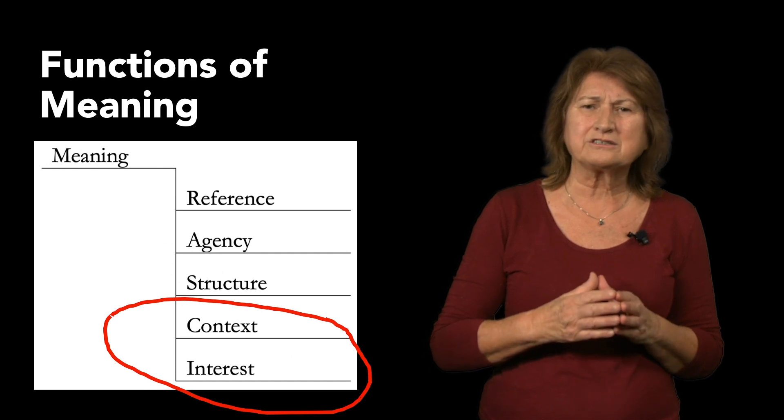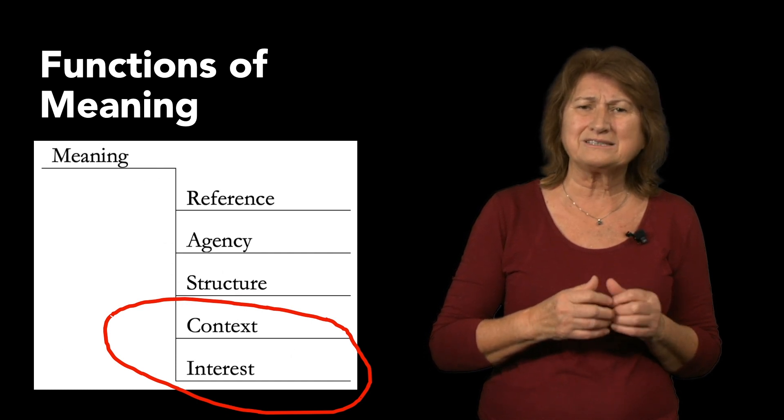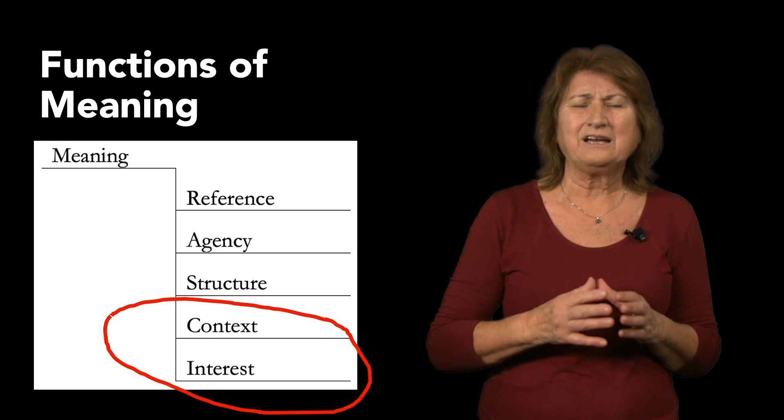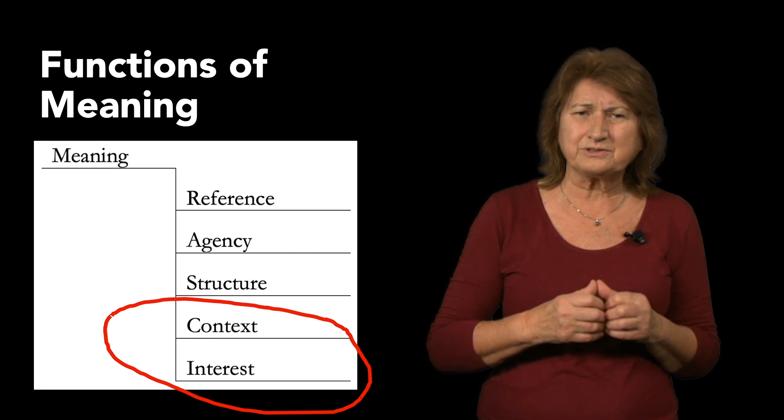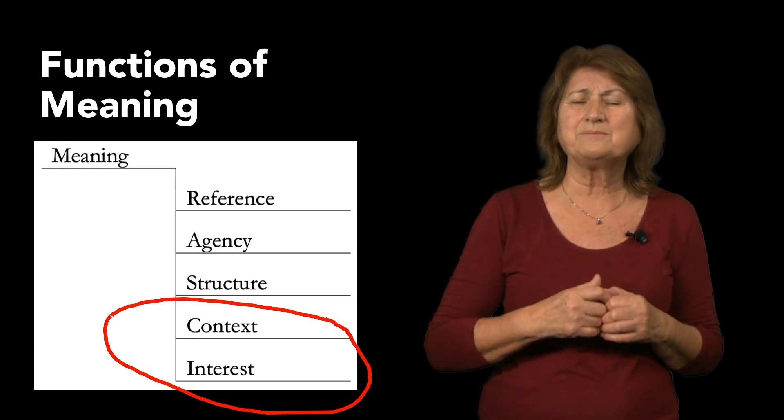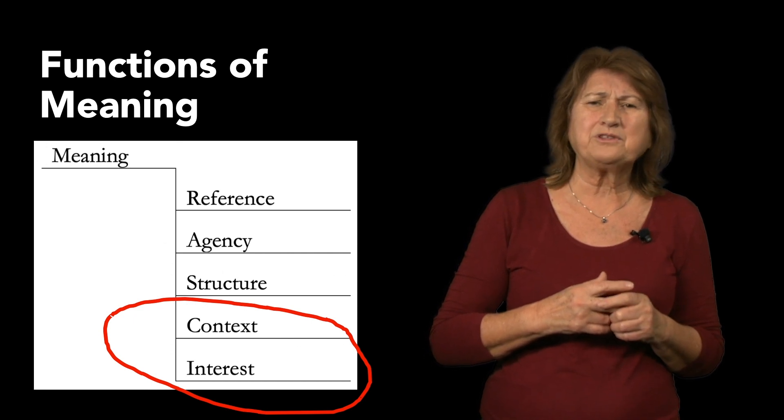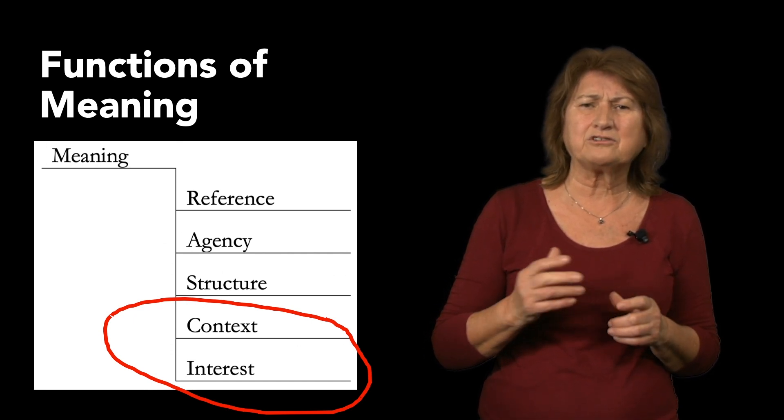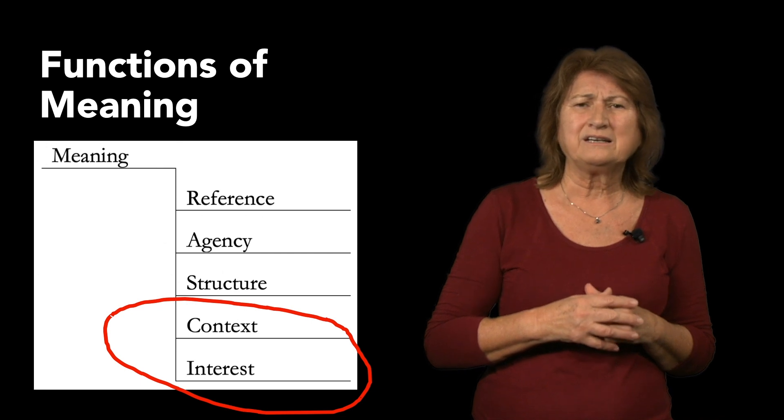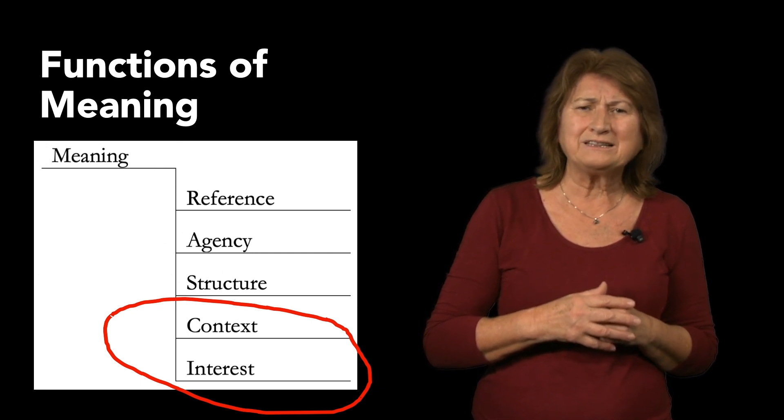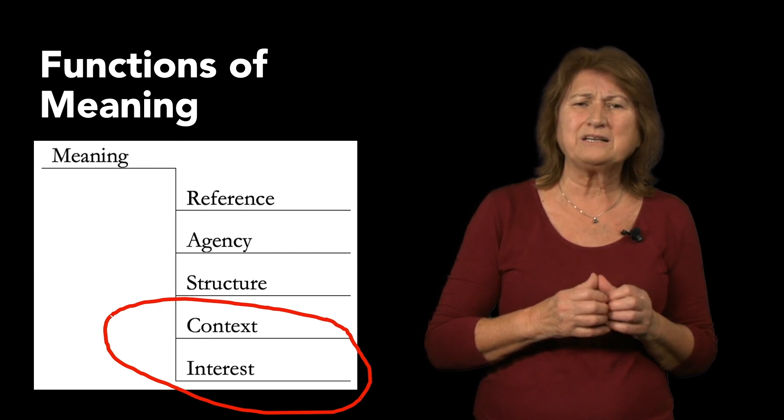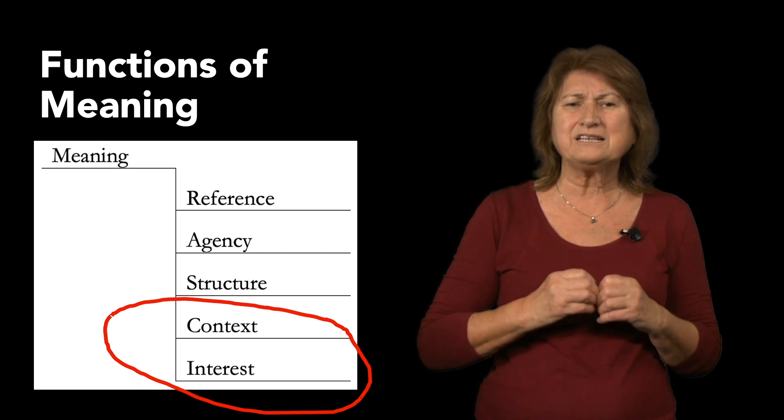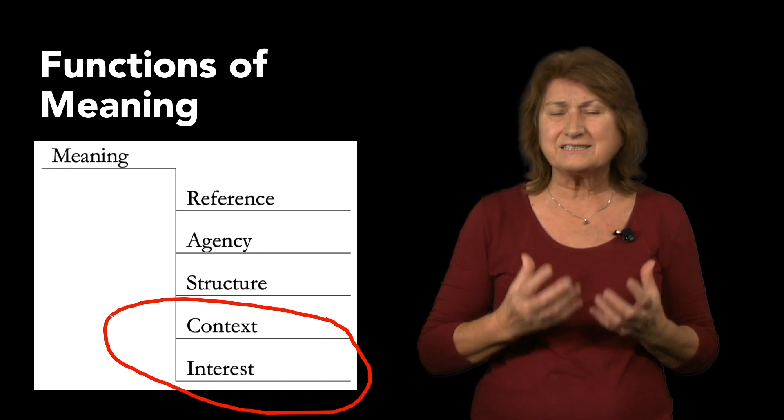But we have added two more that we call context and interest. Halliday spoke of context also, as did Ruqaiya Hasan at great length. They also spoke of purpose, which we have named interest. But these were things that sat outside of the grammar for Halliday. We add them to the system because we believe they are essential and distinct aspects of meaning as a system.